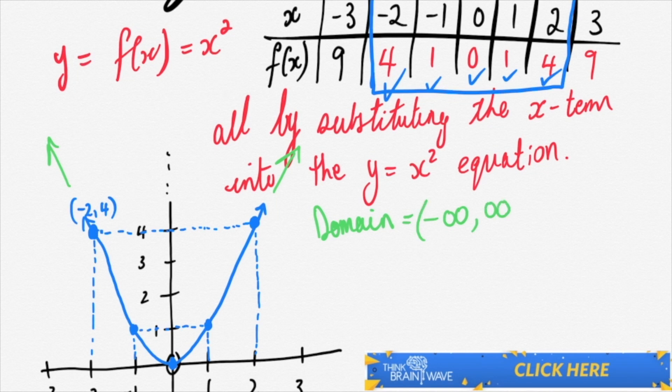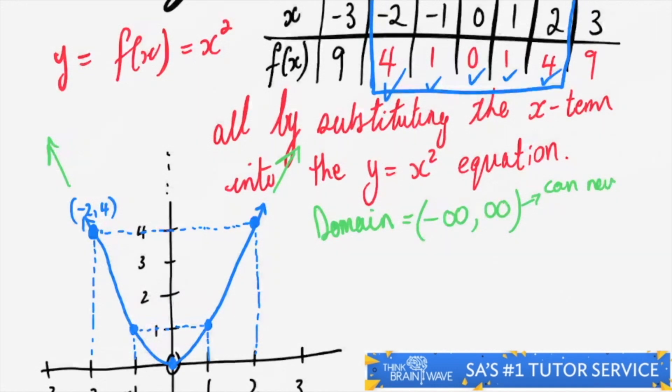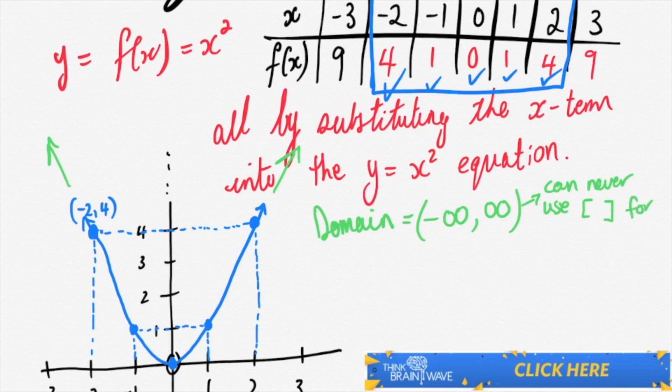Never use square brackets. Always use round brackets. As you can see, I've written this here: can never use square brackets. Square brackets means that you're including a value, and you can never include infinity as it's infinite.